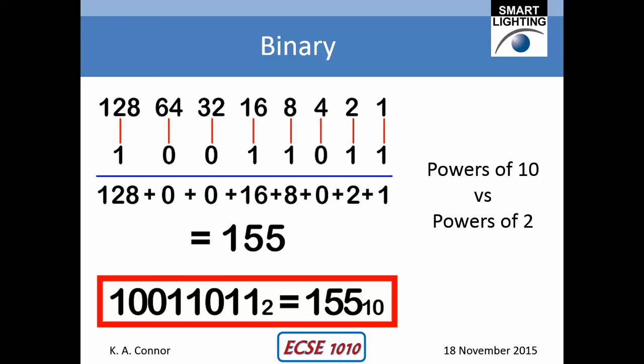In the case of powers of 2, the first digit represents 2 to the 0, which is 1; the second one is 2 to the 1, which is 2; and so forth. So you have 1, 2, 2 squared, 2 cubed, 2 to the 4th, and so on.